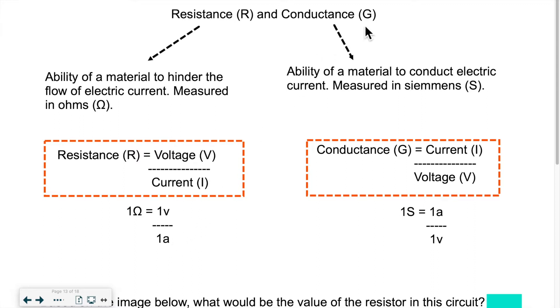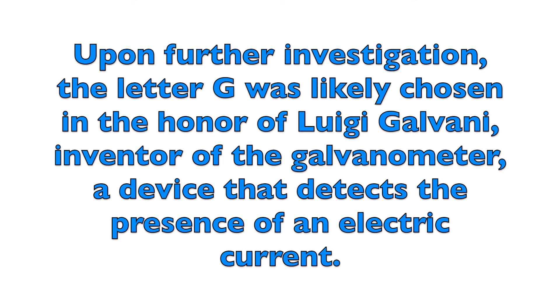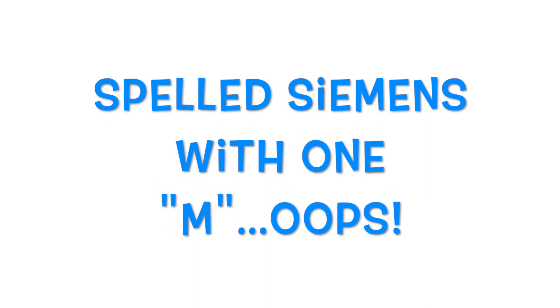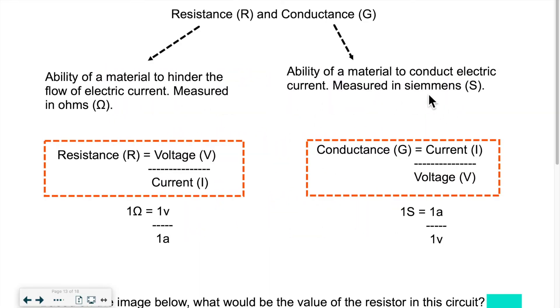Now conductance, which is represented by the letter G, I know you think it should be C, but C was used for other things. So it's represented by letter G. It's basically the counterpart of resistance. It's the opposite. If something resists, it does not conduct well, or if something conducts well, it will not resist well. So it's the flip side of the coin. It's the ability of a material to conduct electric current. It's measured in Siemens, which has capital S as a unit.